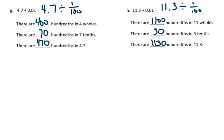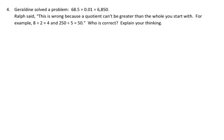Now let's take a look at homework problem number 4. Geraldine solved a problem: 68 and 5-tenths divided by one-hundredth equals 6,850. Ralph said, this is wrong because a quotient can't be greater than the whole you start with. For example, 8 divided by 2 equals 4, and 250 divided by 5 equals 50. Who is correct? Explain your thinking.